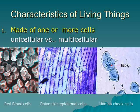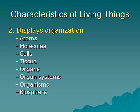The second characteristic of living things is that they display a level of organization. As shown on the slide, the hierarchy goes: atoms, then molecules, then cells, then tissues, then organs, then organ systems, then organisms, and finally the biosphere. This describes the hierarchy or leveling of living things, and we will start our semester with the small-scale aspects — atoms and molecules.